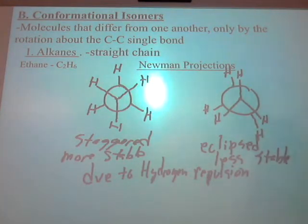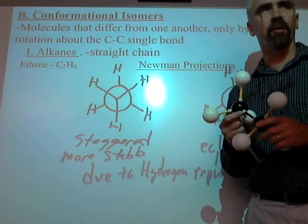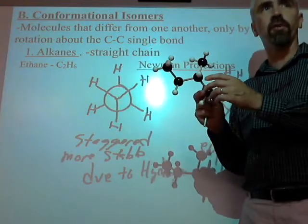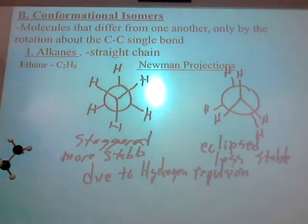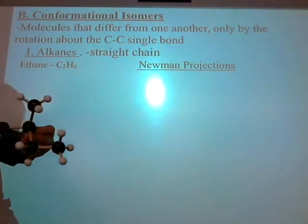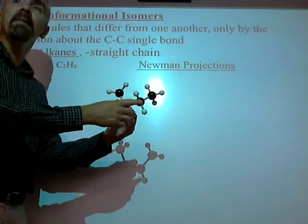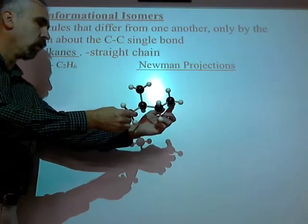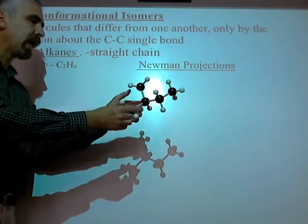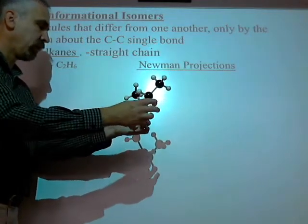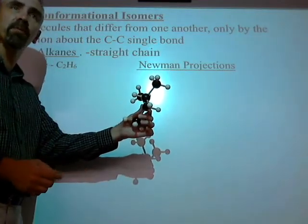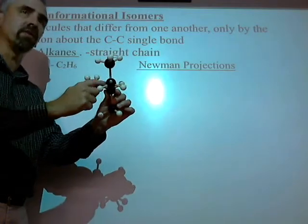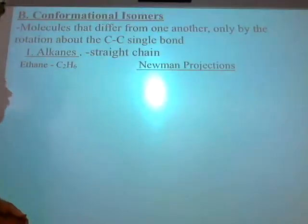Now it would be nice if ethane were the only compound you ever had to do, but unfortunately even a compound like this I can draw the conformations to. I can tilt this guy down any bond. You can see it's one, two, three, four — so that's butane, and he's a 2-methyl. But I can actually rotate him so that I look down this bond and draw the staggered and eclipsed looking down that bond.